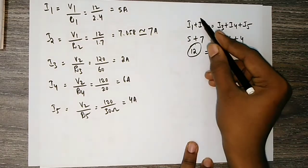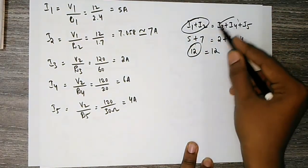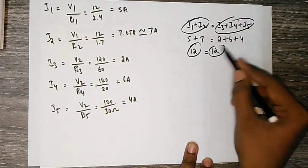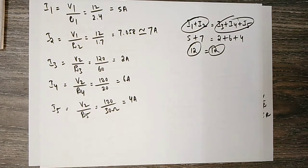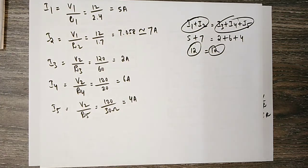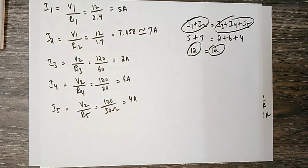We can do a verification at any point in a current circuit — the current in equals the current out. We can verify the current is correct and solve any such problems. If you have any doubts, we will clarify them.